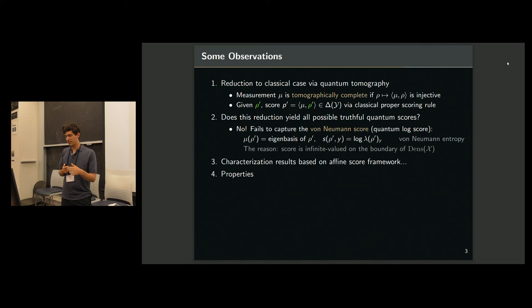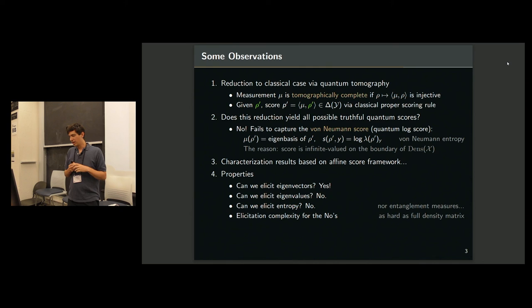So can I design a contract to get someone to tell me what the eigenvectors of the mixed state are? I can do that, but it turns out it can't do that for eigenvalues and entropy. And moreover, if you're familiar with elicitation complexity, which is basically how much information do I need to ask the agent before I can back out what the eigenvalues are, the entropy, it turns out I need as much information as the full density matrix itself. So I may as well just ask them for the full density matrix. I think it's a fun area. There are lots of open questions left, but I'll stop there. Thanks.